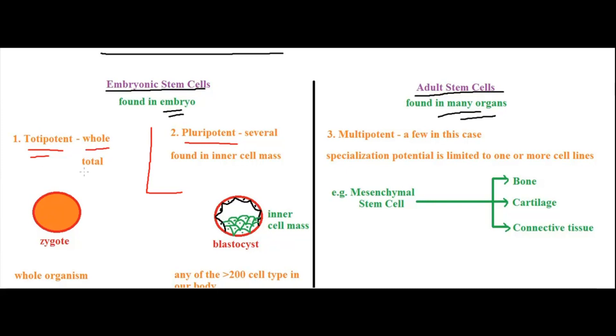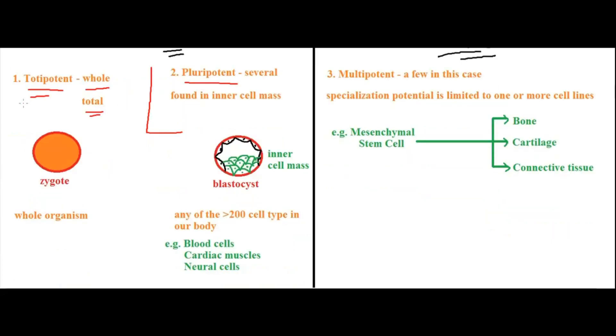To understand totipotency, let's go to the fertilization process. We have the sperm cell which fuses with the egg cell and we get a zygote. A zygote can produce the whole organism. This zygote will start dividing and undergo differentiation, and as a result, the whole organism is made.